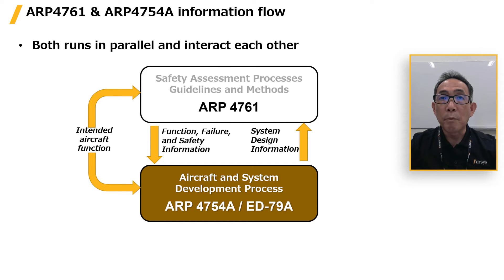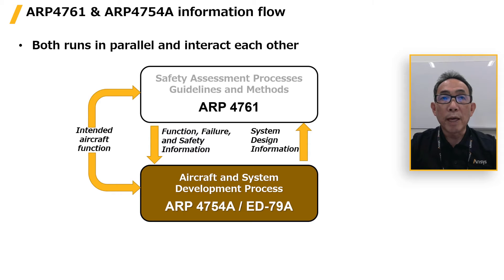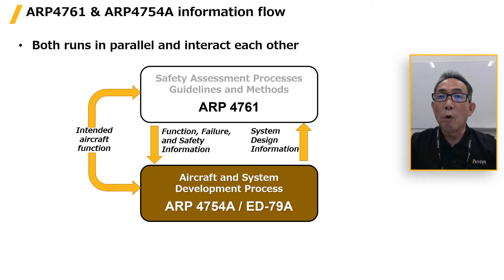4761 and 4754A provide the system development and safety assessment process. They analyze the system design and provide requirements to ensure compliance with the proposed design during development. They further evaluate the actual implementation including any defects, require conformance to specifications and certification rules, and demonstrate conformance.